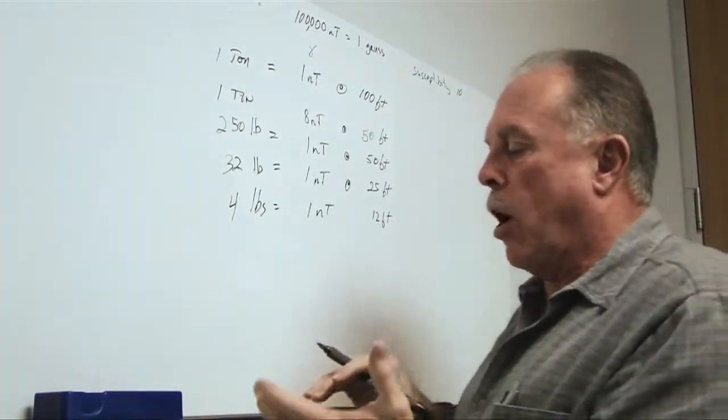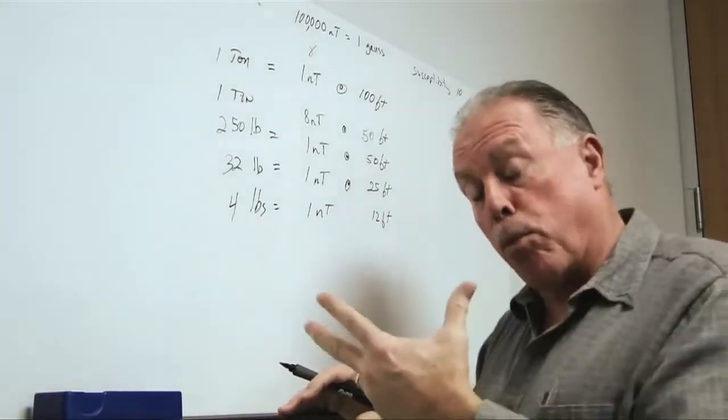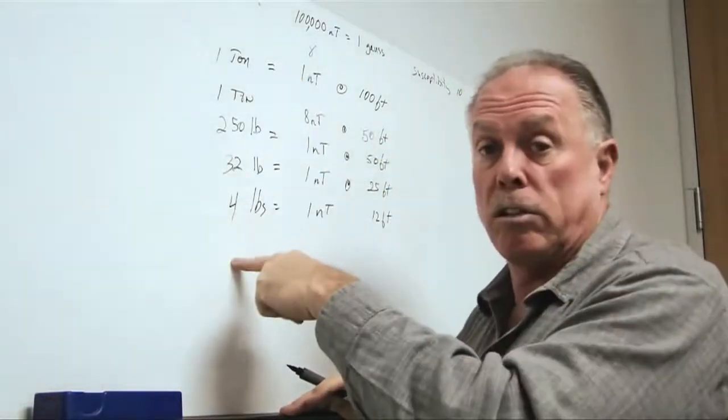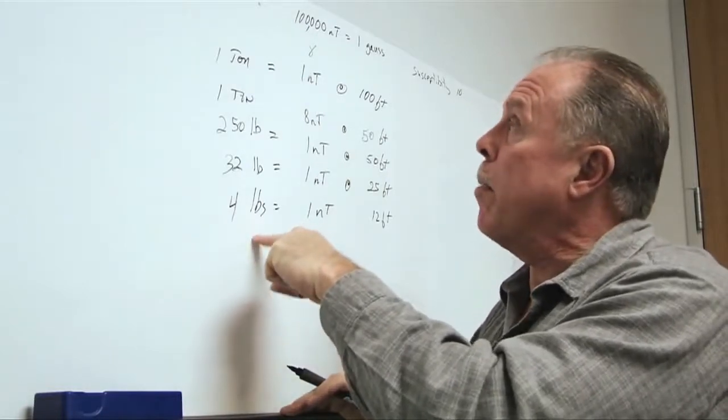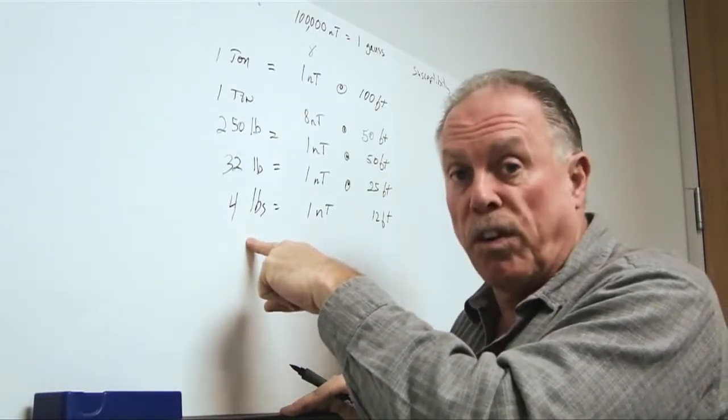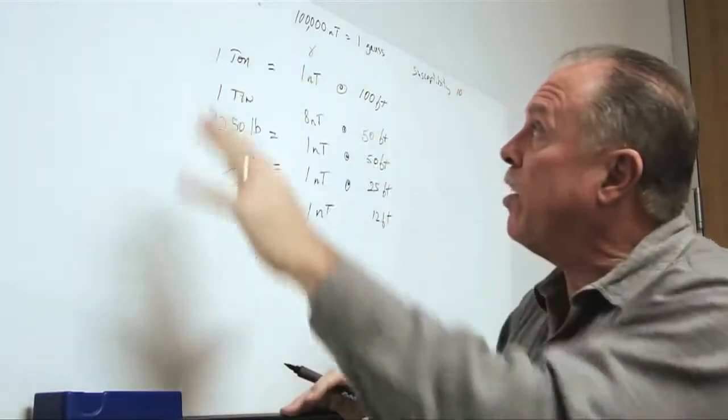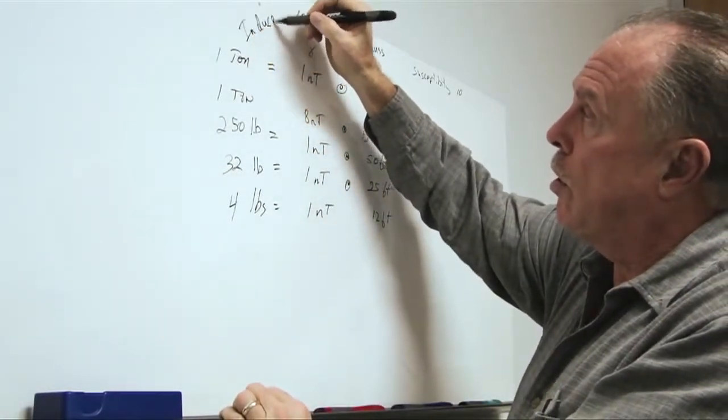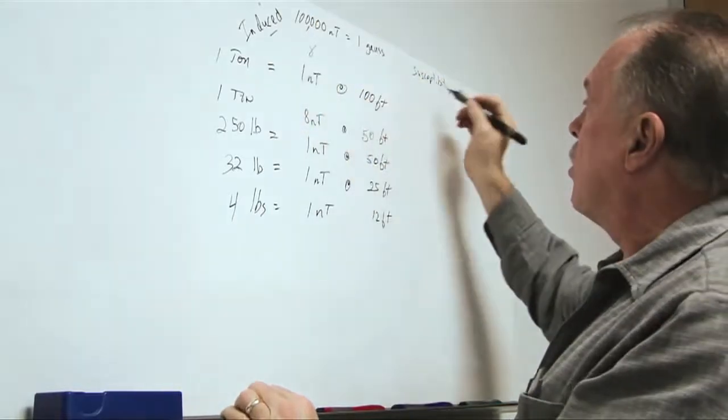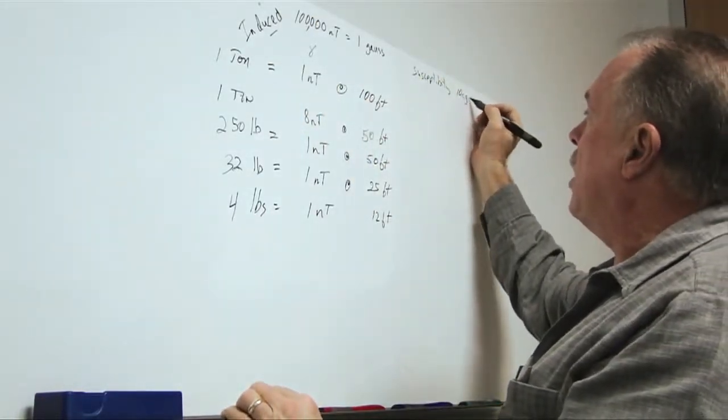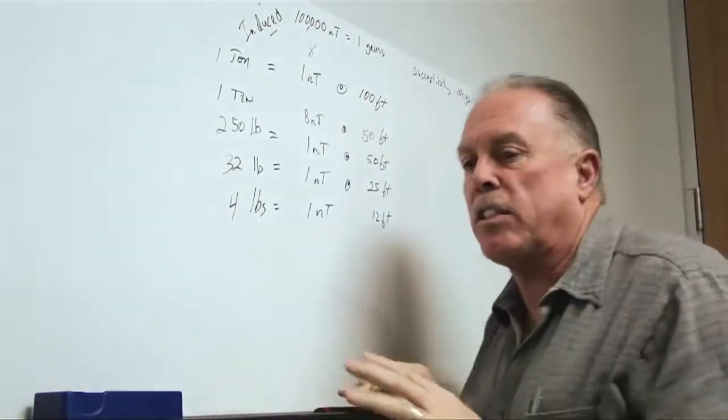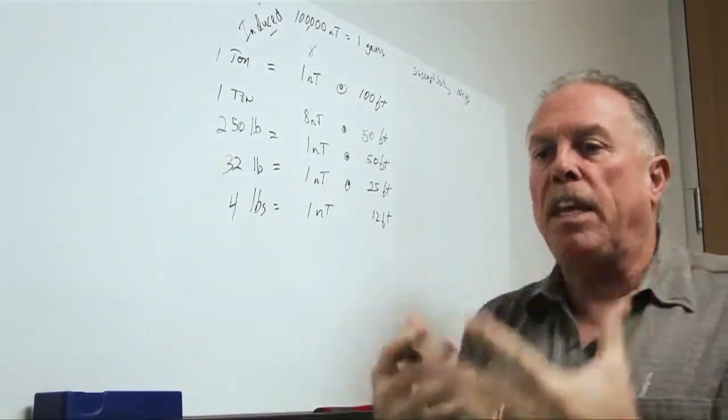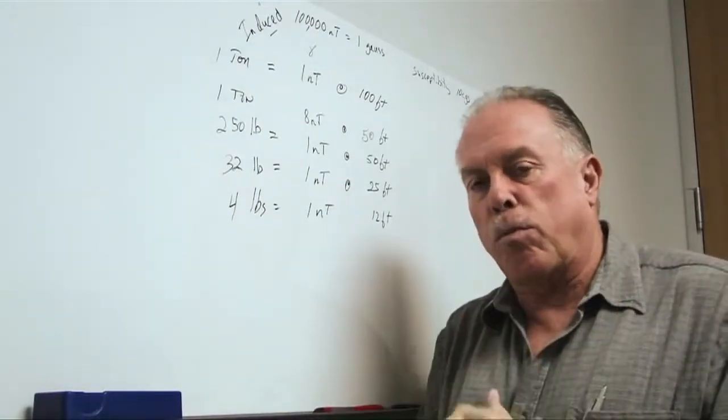Now, I want to talk about some things that actually improve our ability to detect these sizes. Because, you remember that I talked about induced fields. So, all of this is based on induced fields with a susceptibility of 10 CGS.